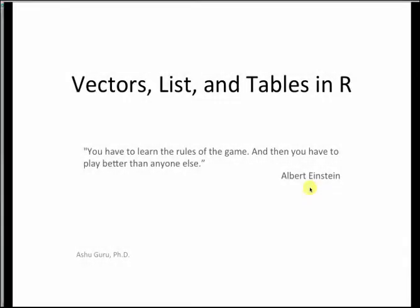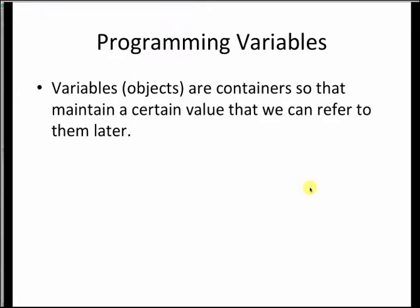We will now talk about three of the most common variable types or data types that we will be using in R, and they are vectors, lists, and tables. Let's define what a programming variable is. You can think of a programming variable as a container that will maintain a certain value, which we can refer to later in that same program.